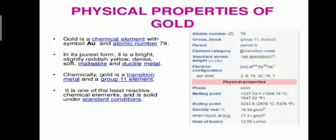Gold is a chemical element with symbol AU and atomic number 79. In its purest form, it is bright, slightly reddish-yellow, dense, soft, malleable and ductile metal. It is a soft, yellow-colored metal. Chemically, gold is a transition metal and a group 11 element. It is one of the least reactive chemical elements and is solid under standard conditions. When we react gold with water, the gold will not dissolve — it is the least reactive metal.